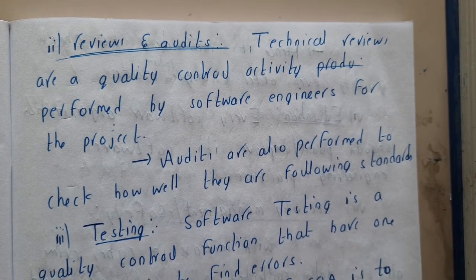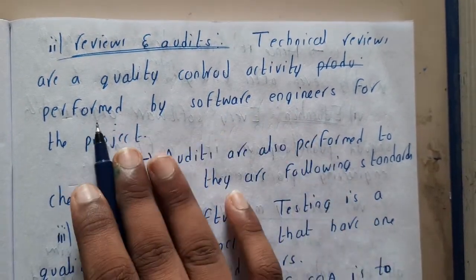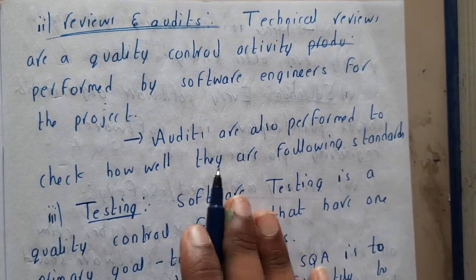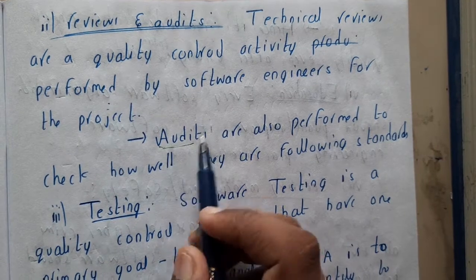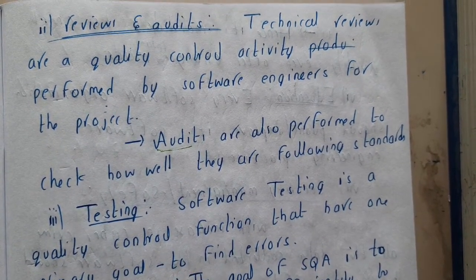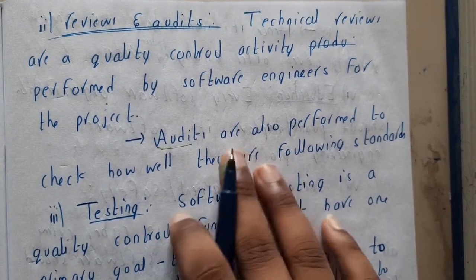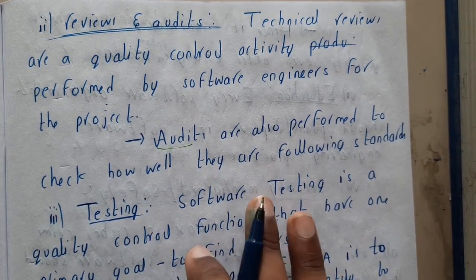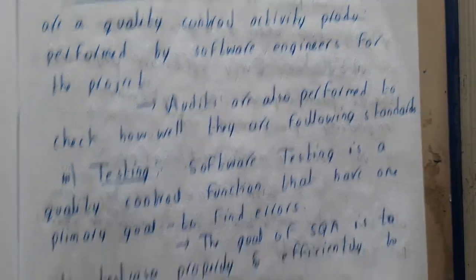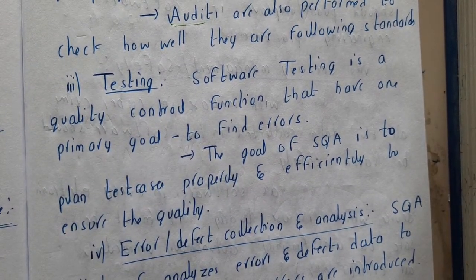Similarly, reviews and audits — you need to do frequent reviews and audits to check whether the software is working fine. Technical reviews are a quality control activity performed by a software engineer for the project. Audits are also performed to check how well the team is following the standards. In some companies they do self-audits, and sometimes someone else comes and checks files and everything. They review things and finally submit a report about the status and quality of the product.